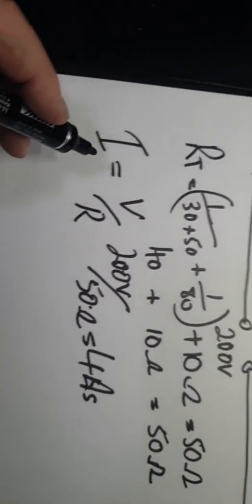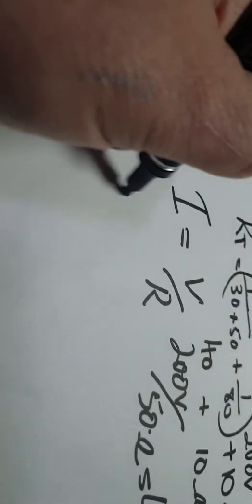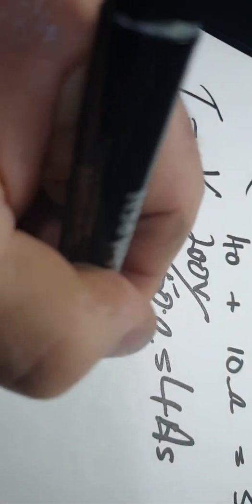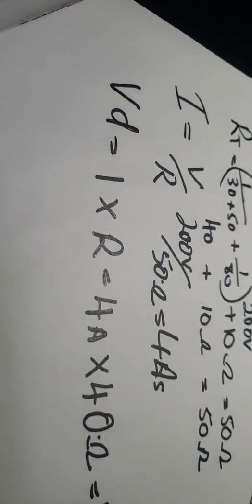So the next thing I'm going to do now is the voltage drop. Voltage drop equals I times R. The I I'm going to use is the 4 amps. The resistance I'm going to use is the 40 ohms that we had over here. So 4 times 40 ohms equals 160 volts. Okay, so we have voltage drop over the whole lot.